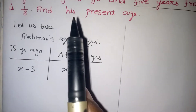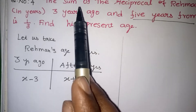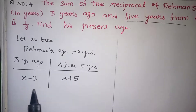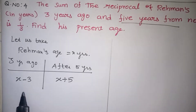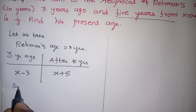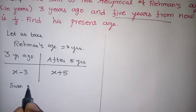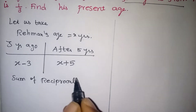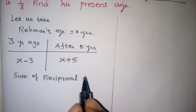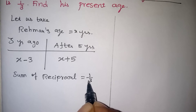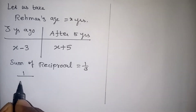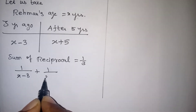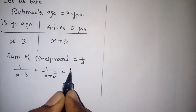Now in that question, they are asking you to find the sum of the reciprocals of these two ages, and that sum equals 1 by 3. So we write: 1 by (X minus 3) plus 1 by (X plus 5) equals 1 by 3.